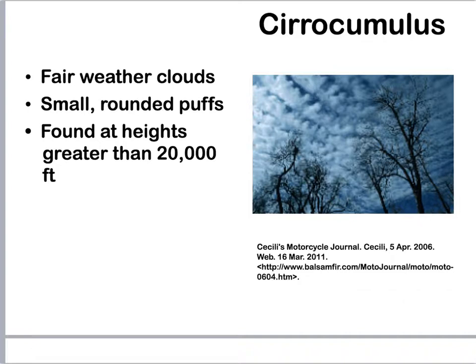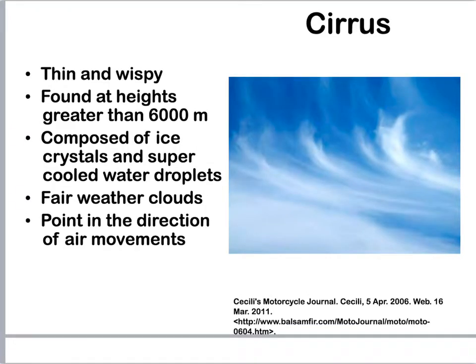Cirrocumulus — higher yet. These are also fair weather clouds, small and puffy, just higher up in the atmosphere. Cirrus clouds mean thin and wispy, found very high up in the atmosphere at up to 20,000 feet. These are composed of ice crystals or supercooled water droplets — water droplets that have no solid particle to condense on can reach below freezing temperatures but remain liquid. Cirrus clouds are also fair weather clouds, and they point in the direction the air is moving.